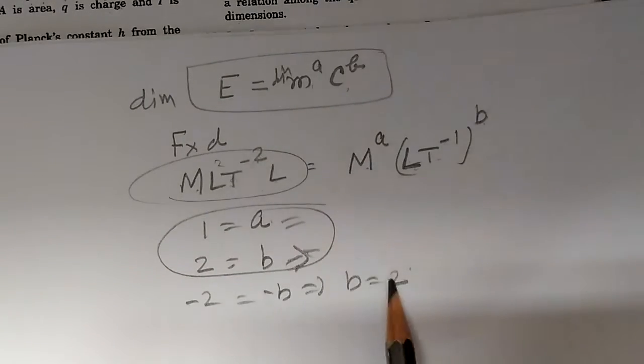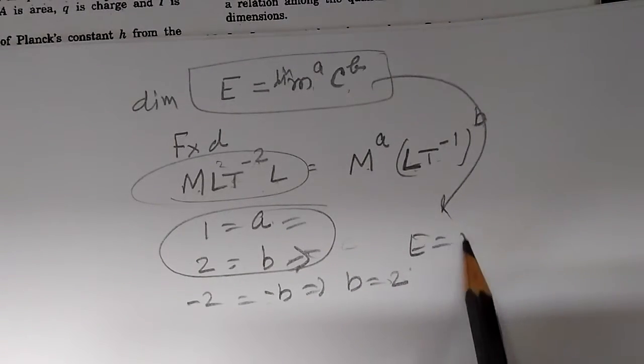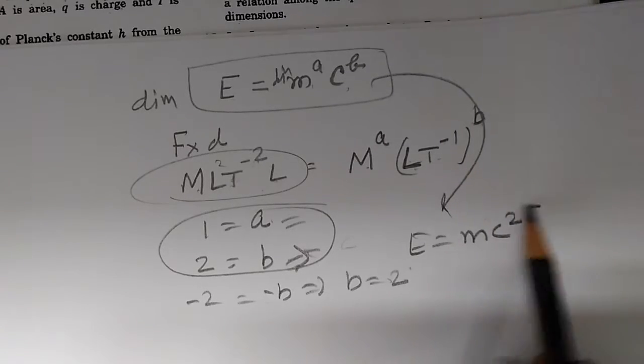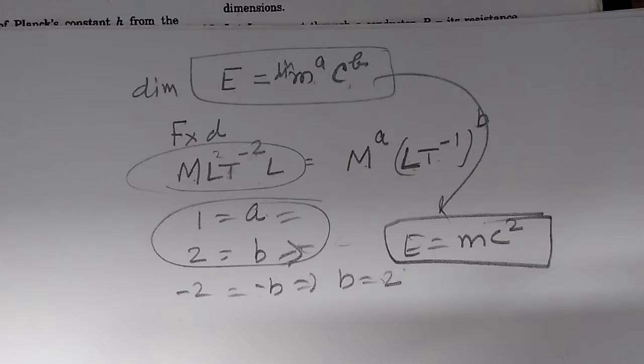Now substitute the values of A and B here. In this equation, we get E equals M to the power A, C to the power 2 or C squared. That is Einstein's famous E equals MC squared.